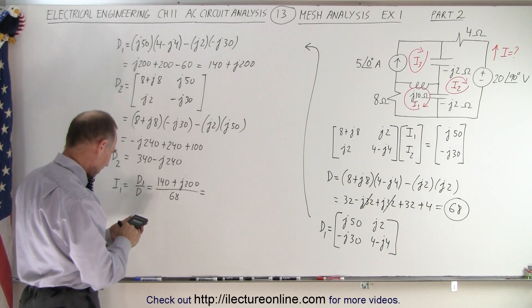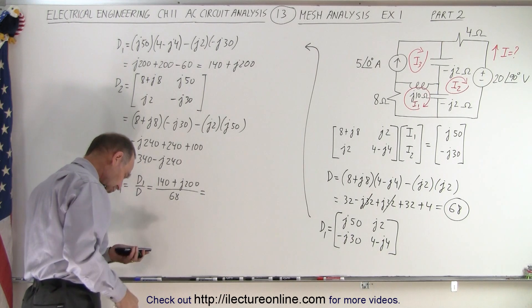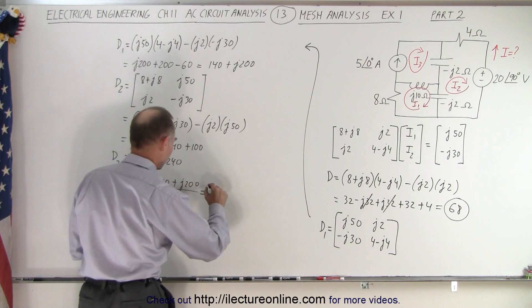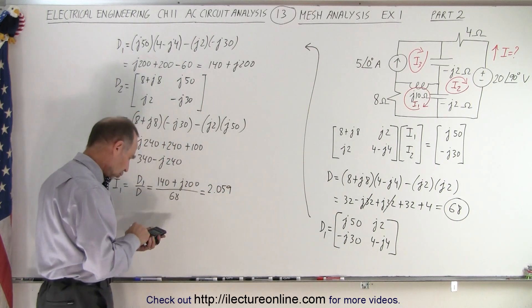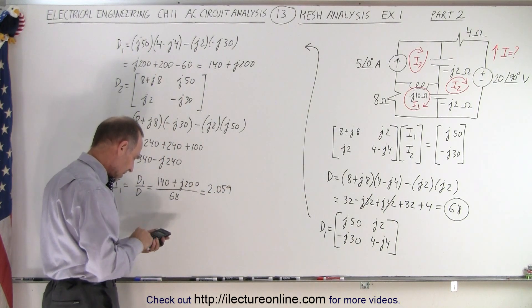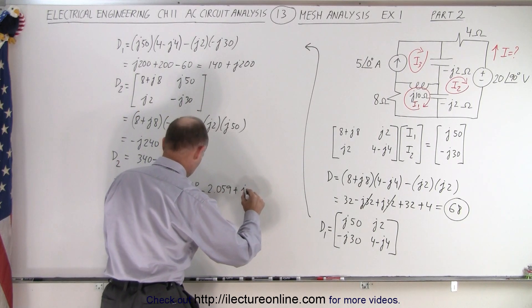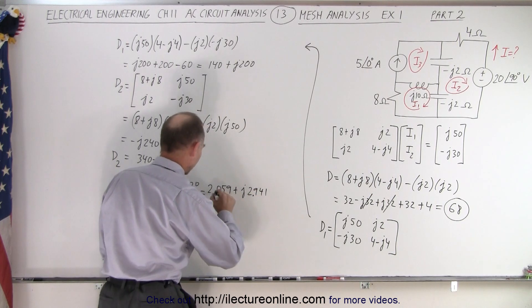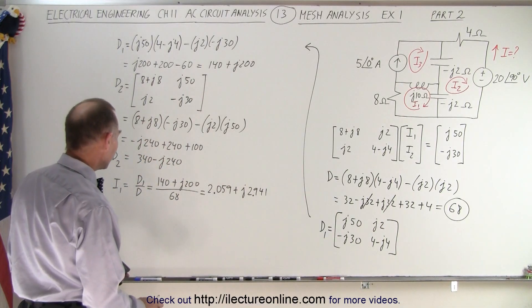So 140 divided by 68, which is equal to 2.056, no, 2.059. So 2.059 and 200 divided by 68 is plus j2.941. So 2.941. So make sure we have the decimal places in there.